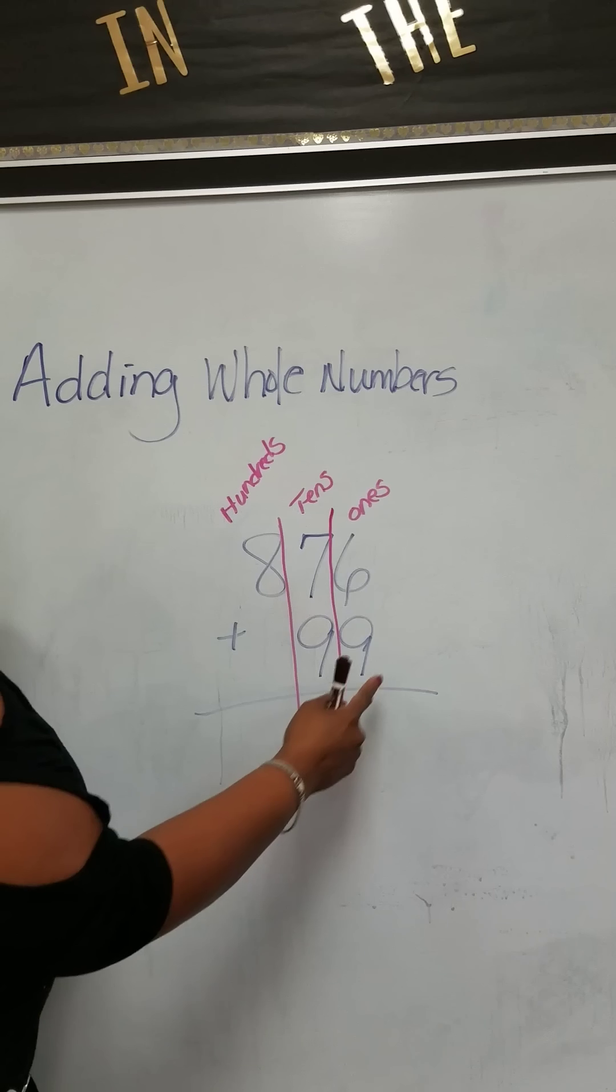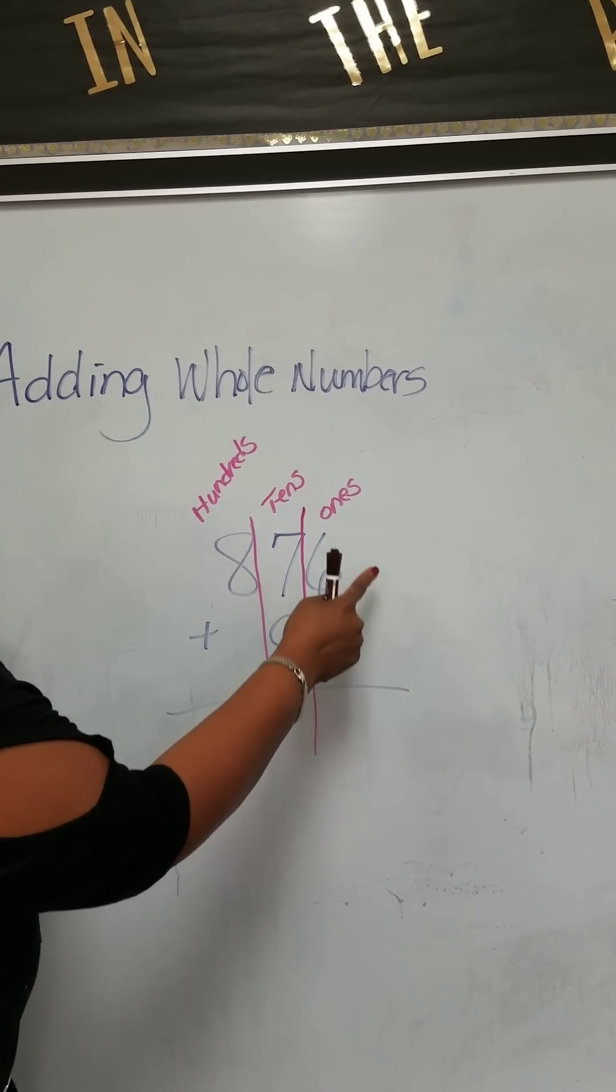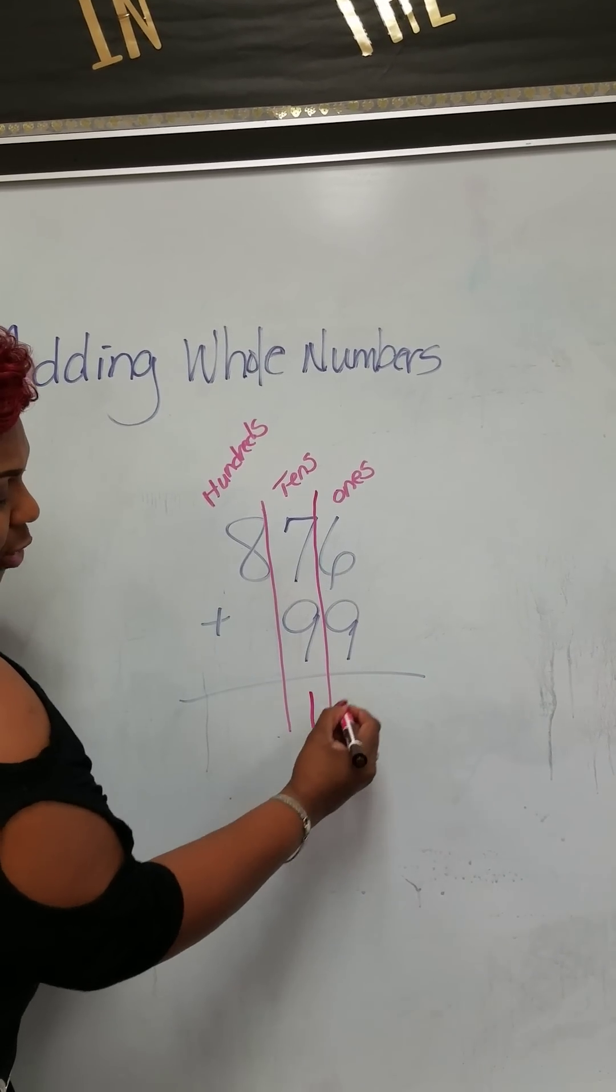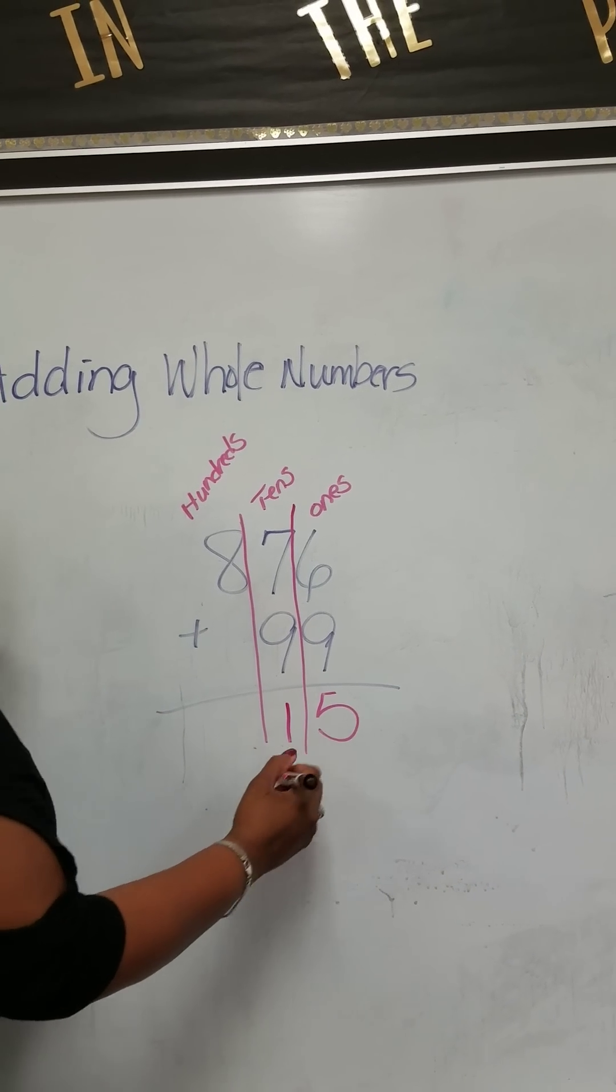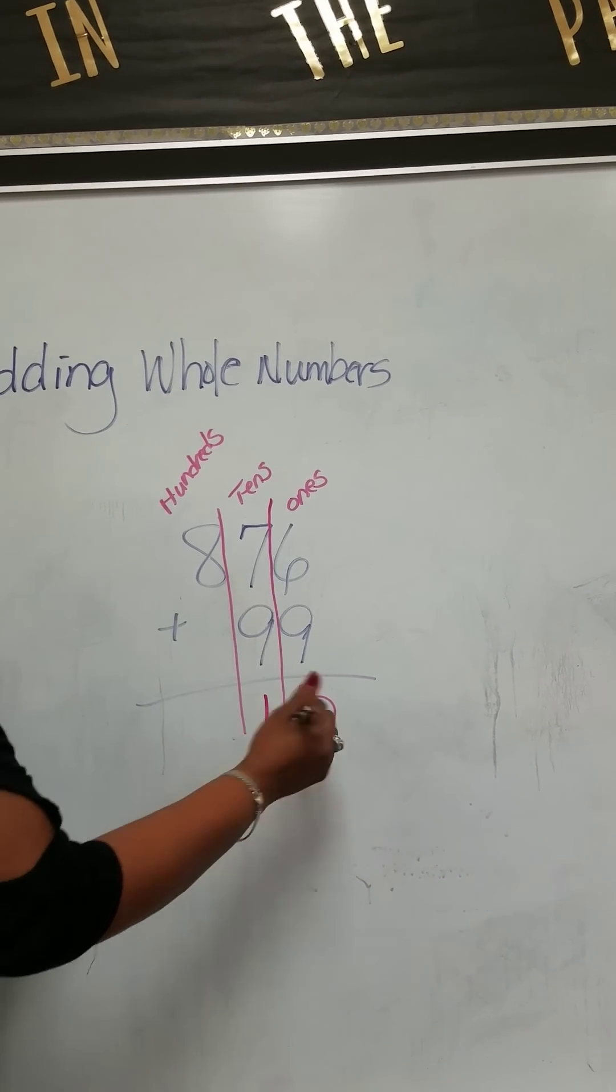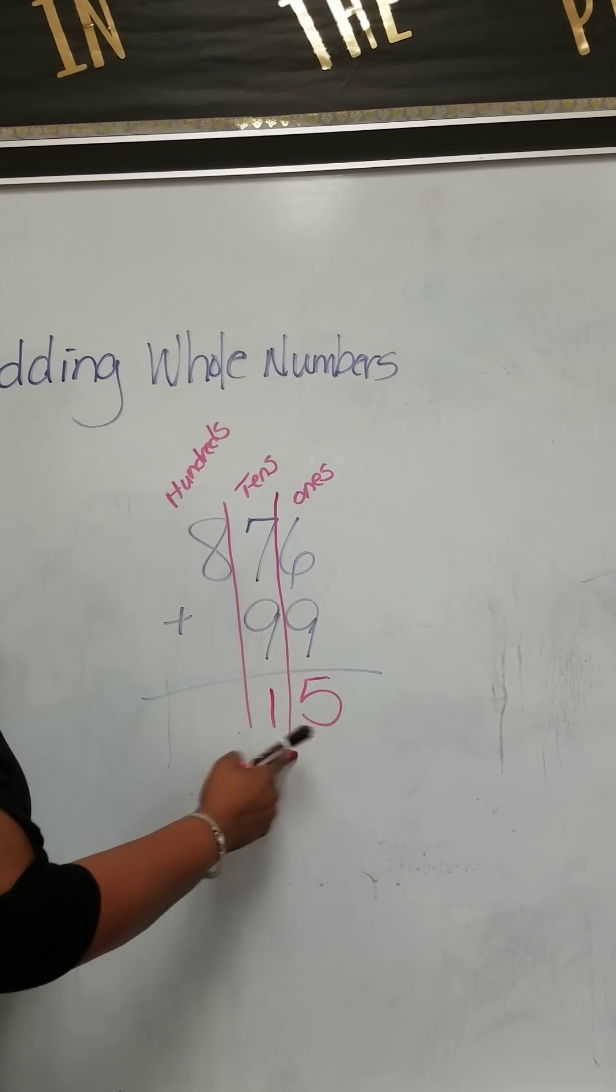So here we have nine ones plus six ones. That gives us 15. We put the whole number 15 here, because remember we're not regrouping. We're just going to put the whole number 15 there.